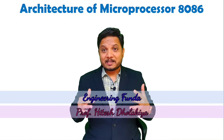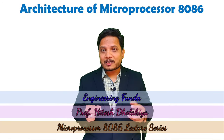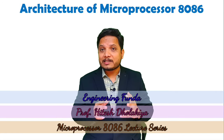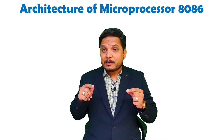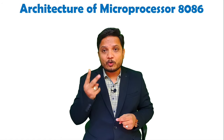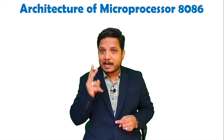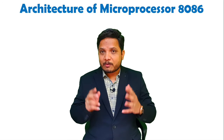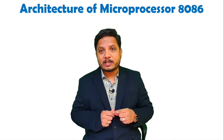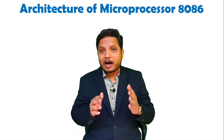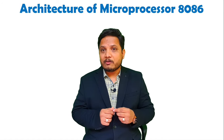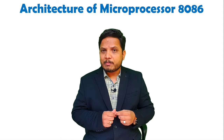Welcome to Engineering Funda family. This video is part of the microprocessor 8086 video lecture series. In this video, I will explain the architecture of microprocessor 8086. The architecture is bisected into two parts: Bus Interface Unit and Execution Unit. After watching this video, you will have a clear idea of how the microprocessor 8086 functions and how both units operate within the architecture.